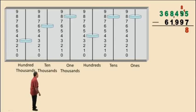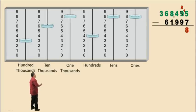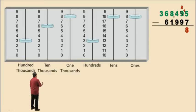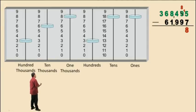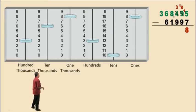Now in the tens column, we have 8 subtract 9. We can't do that — we have to borrow from our hundreds column. So notice our hundreds column changes to a 3, and we borrowed 100, which is 10 tens, so we now have 18 tens. Let's go ahead and write that up. Now we can perform the subtraction in the tens column: 18 subtract 9 is 9.